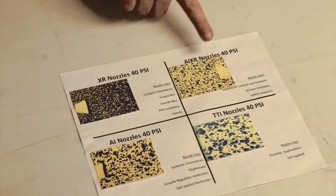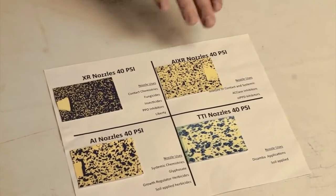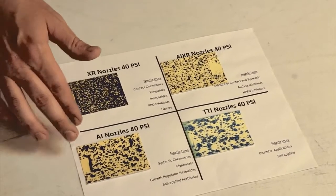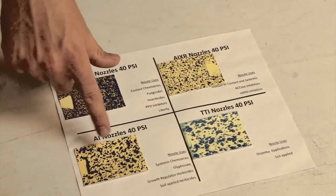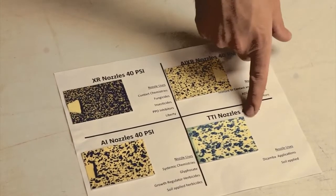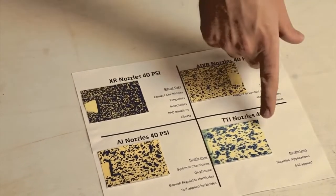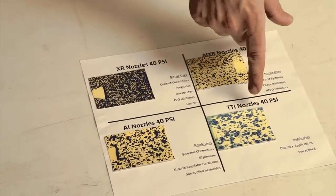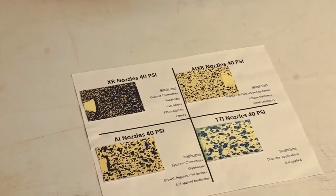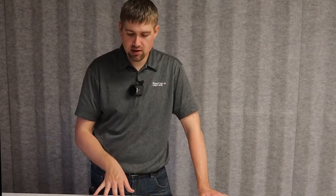With an AIXR you get a little bigger droplets and you start to reduce the amount of coverage. With an AI nozzle you're getting even less coverage, but you have a lot fewer driftable fines. The TTI nozzle has very large droplets — we're missing a good majority of the target, but we don't have nearly the driftable fines. This is at 20 gallons per acre; we would see even less coverage as we reduce the gallons per acre.